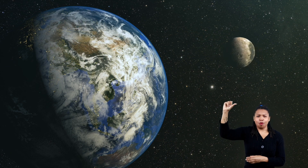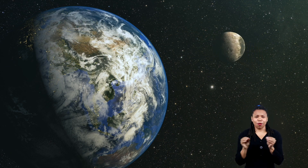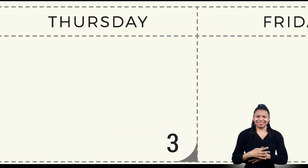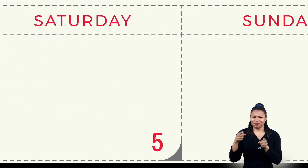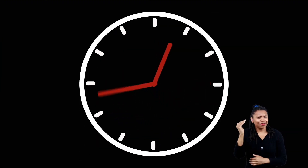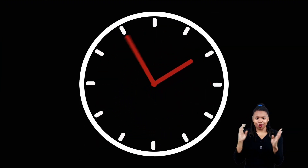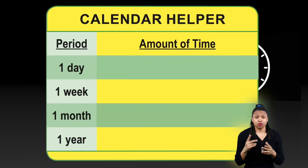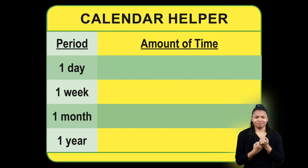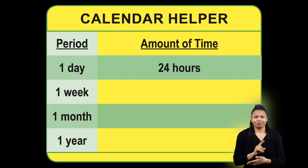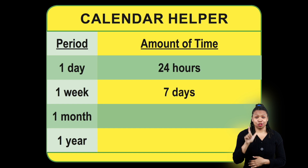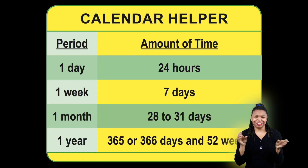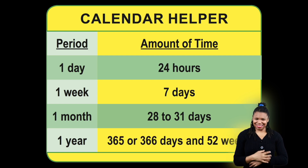There are also 52 weeks. A week is a time period that lasts seven days, with each day also called a different name. And as you may already know, there are 24 hours in a single day. To help you remember the different numbers, use the calendar helper: one day equals 24 hours, one week equals seven days, one month is 28 to 31 days, and one year is 365 days.